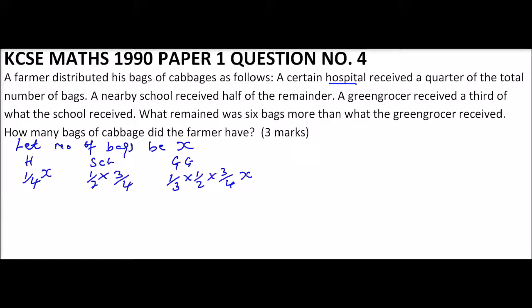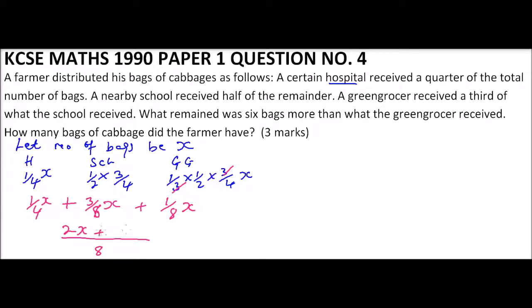This means the hospital received one quarter X, the school received three over eight X, and the green grocer received one over eight X. When we add these up, the LCM is eight, giving us two X plus three X plus X over eight, which equals six over eight X, which simplifies to three over four X distributed in total.